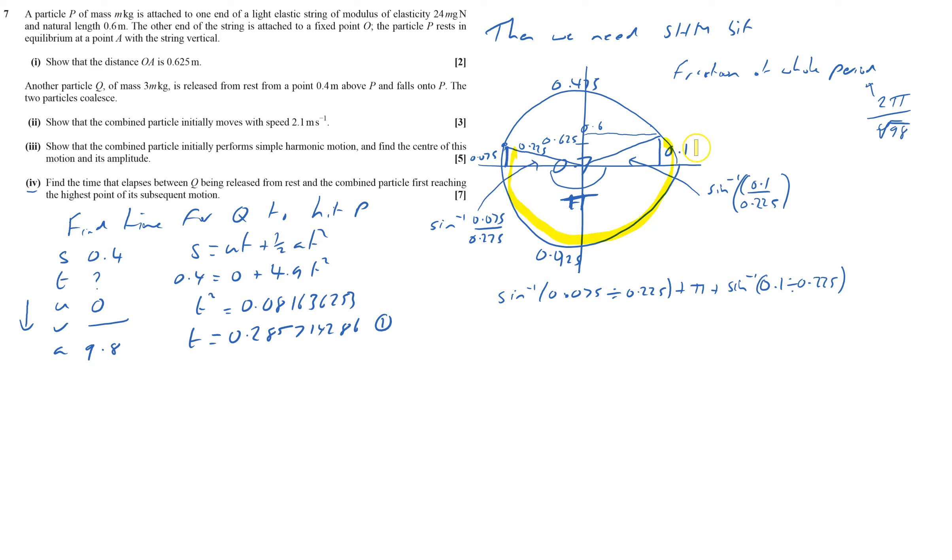I've got to work out the fraction of the whole period and the whole period we worked out earlier was 2 pi over root 98. So that equals 3.941983555 divided by root 98, which gives 0.398200472 and that's the second part of the journey.